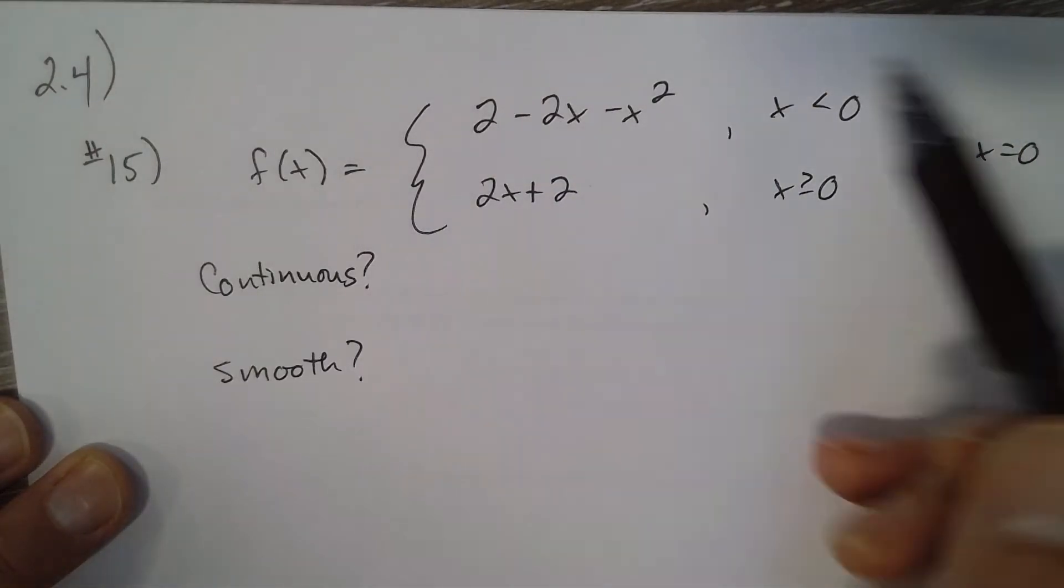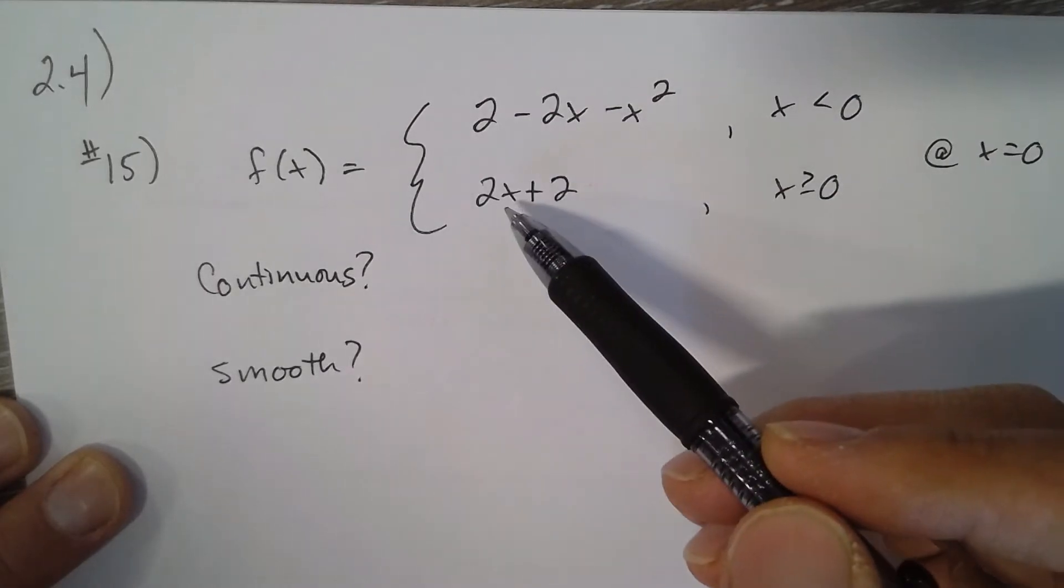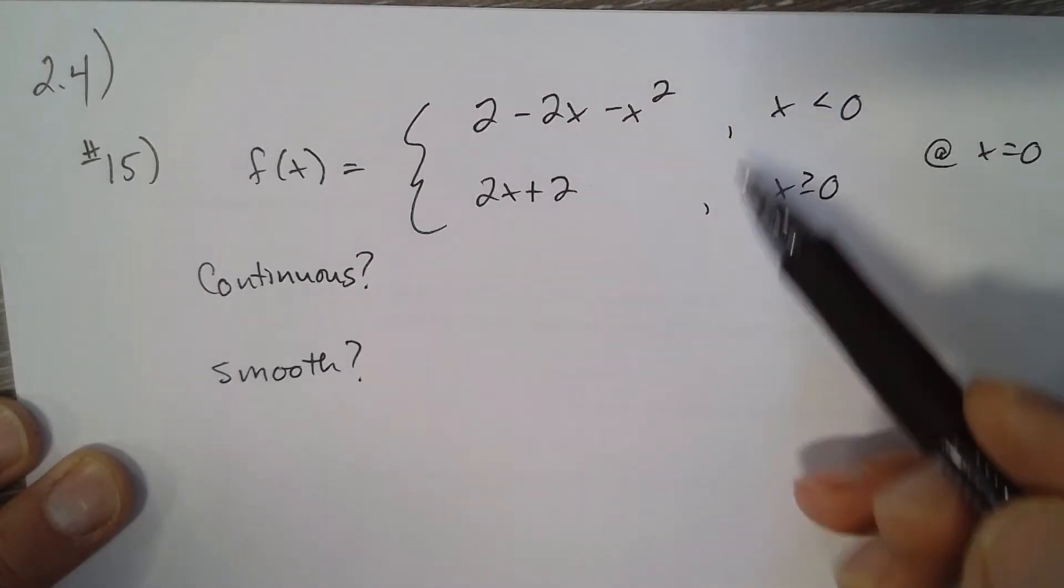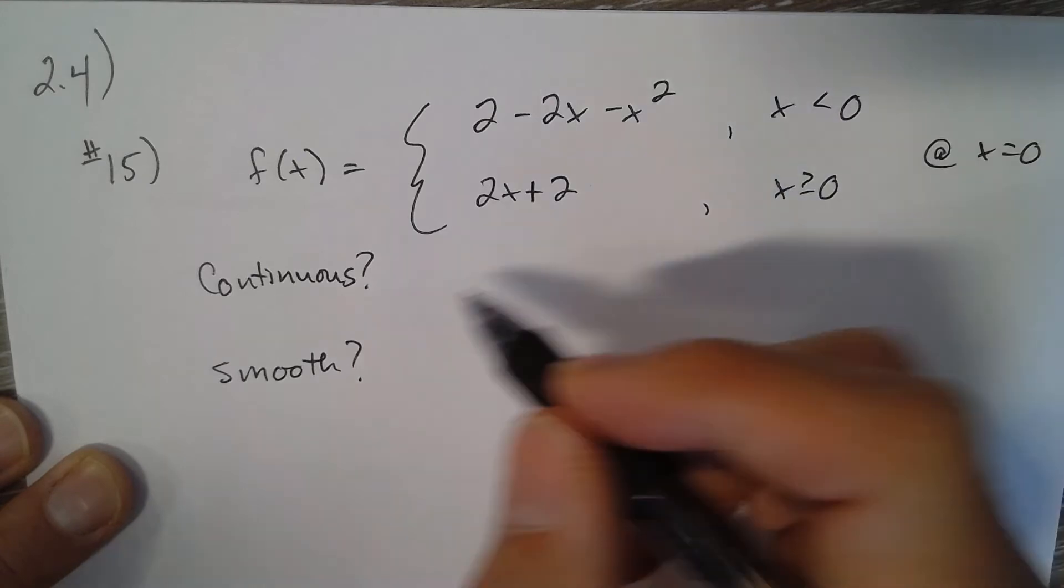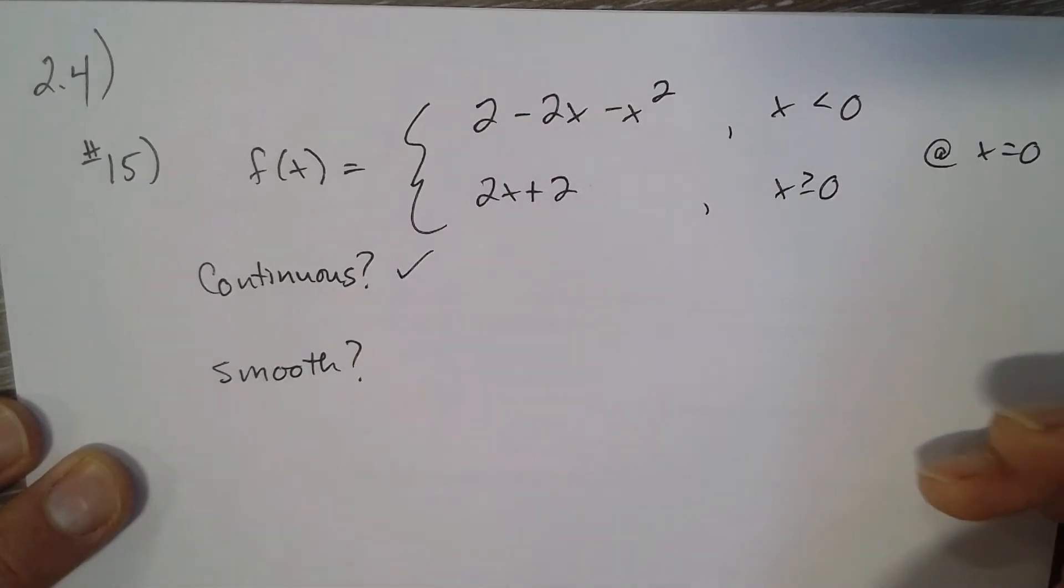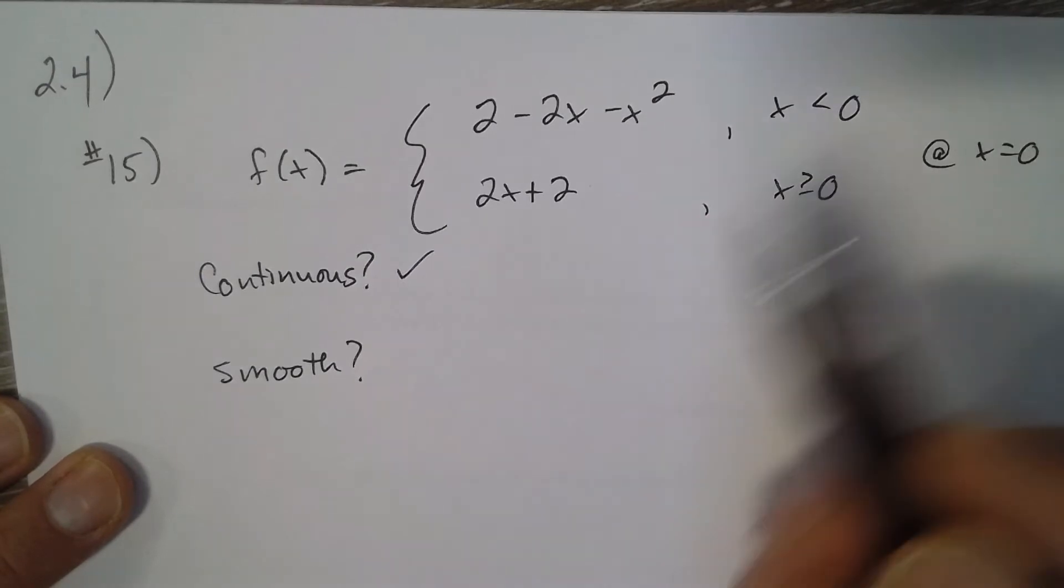Testing continuity at zero: If I plug zero into this piece and this piece, I get two. If I plug zero into here, I get two. So they do meet up at the same point. We still don't know if it's a tangent at that point, but we know they meet.